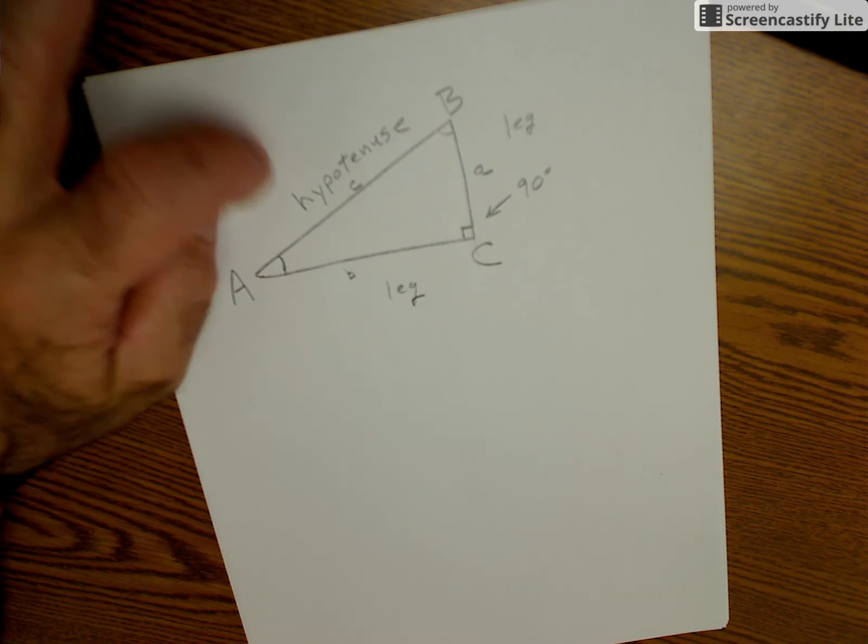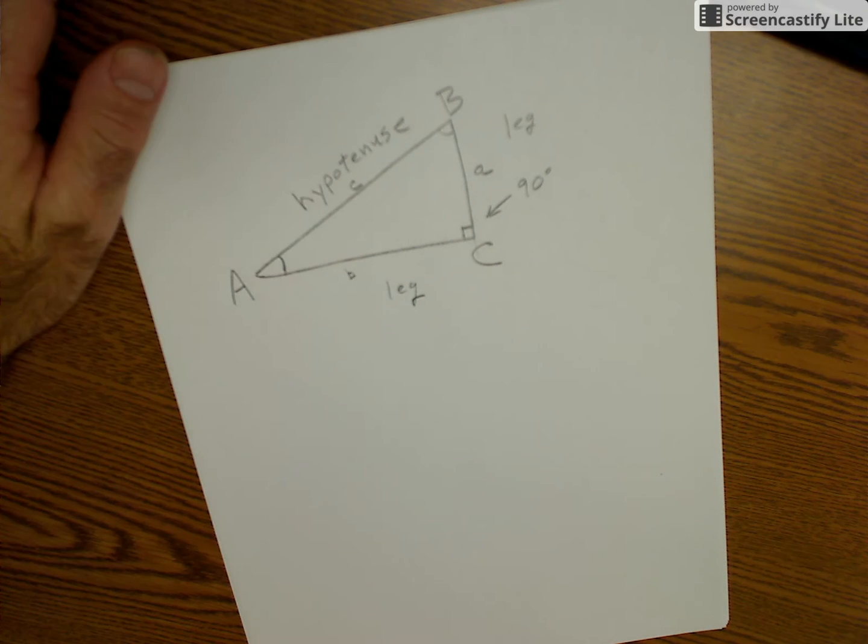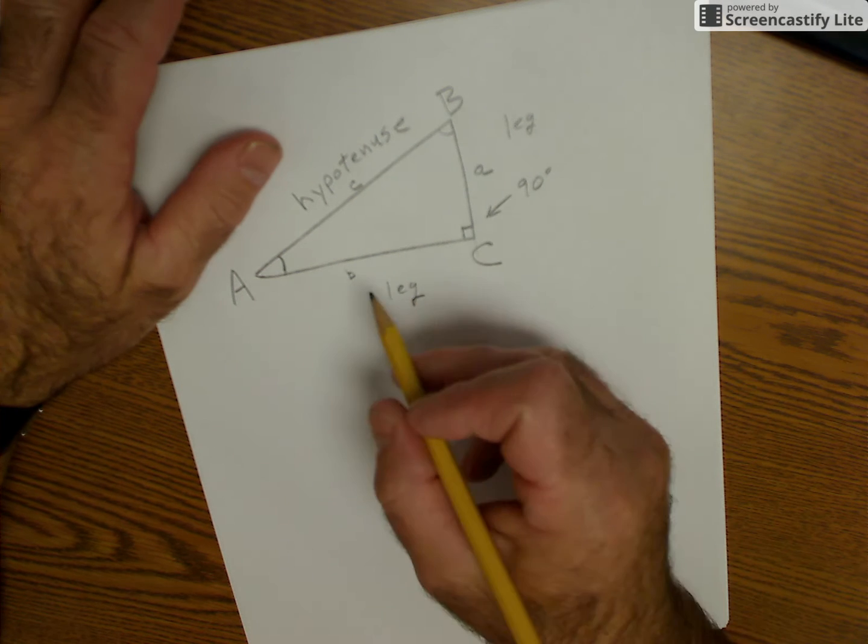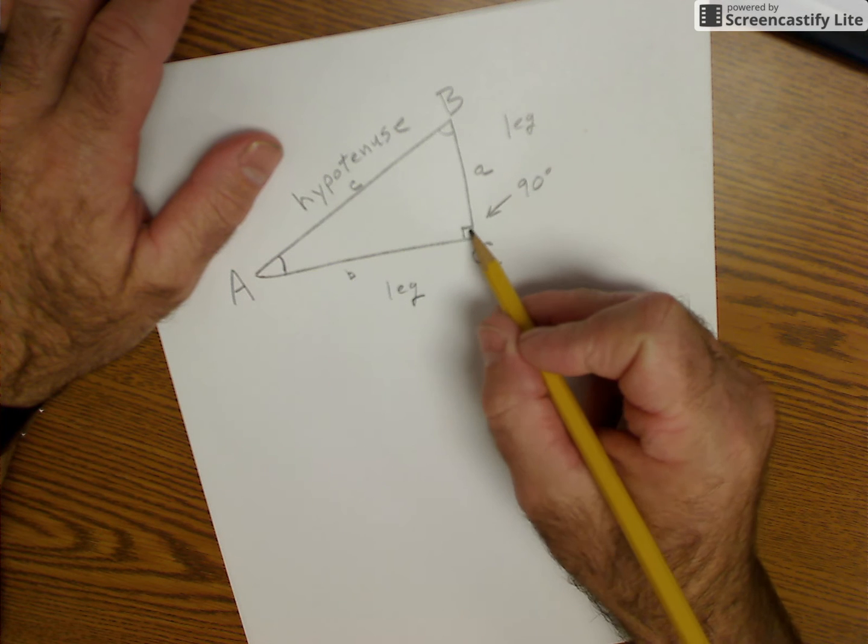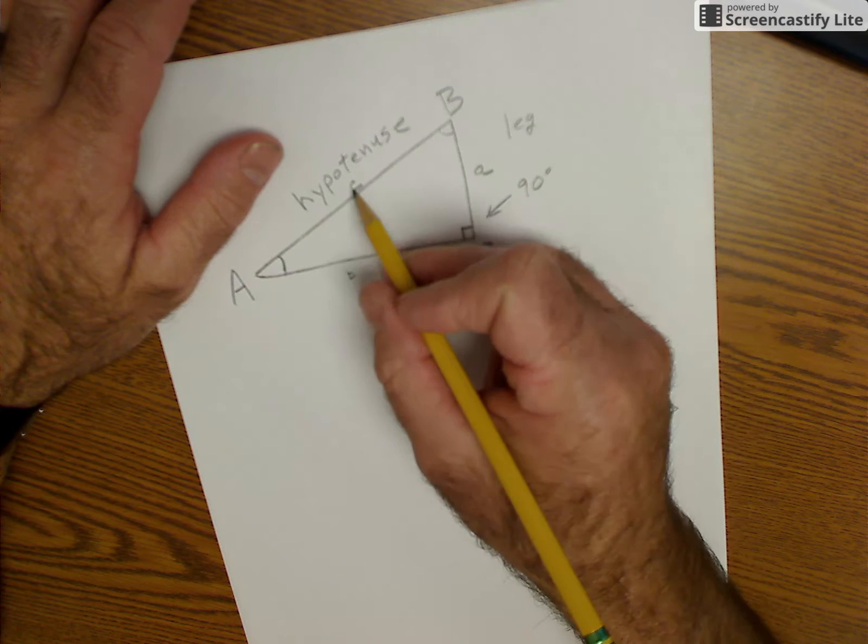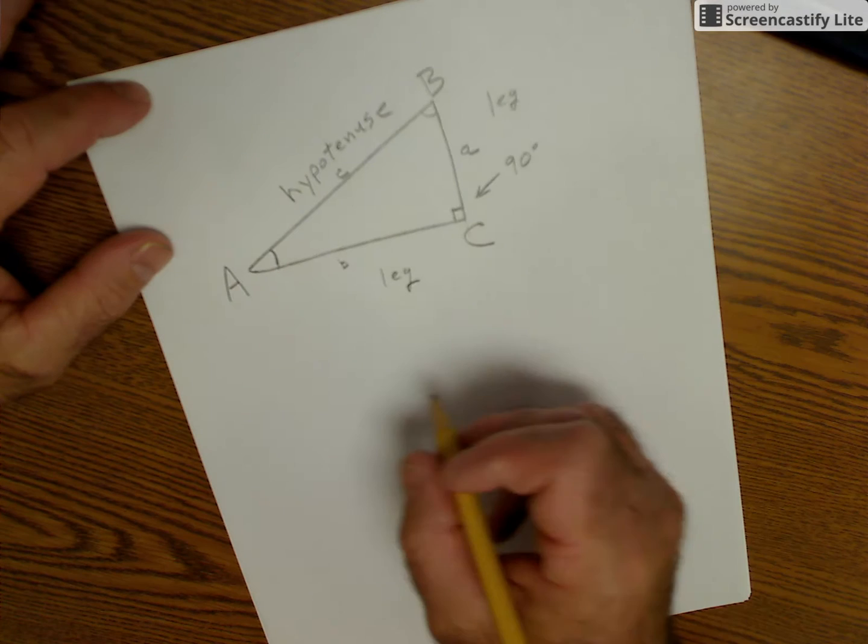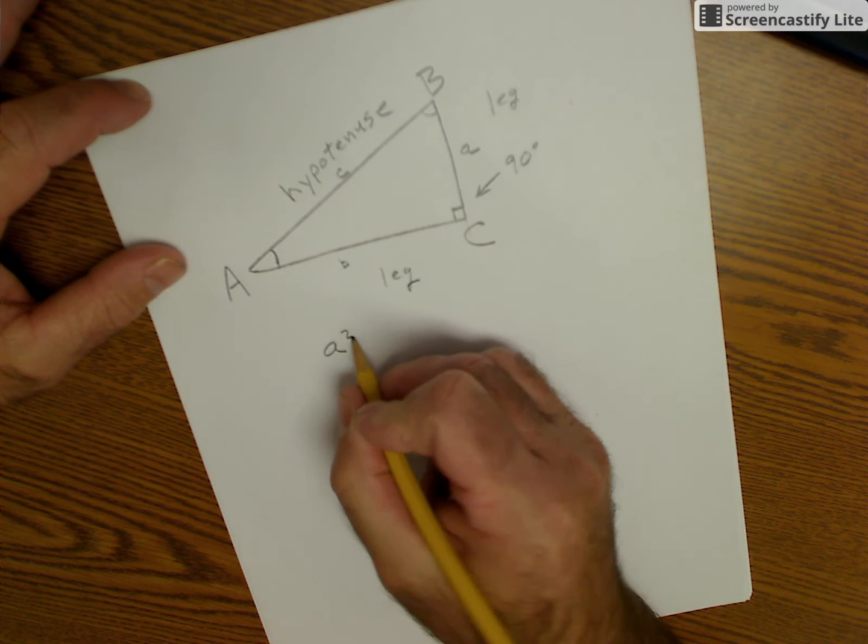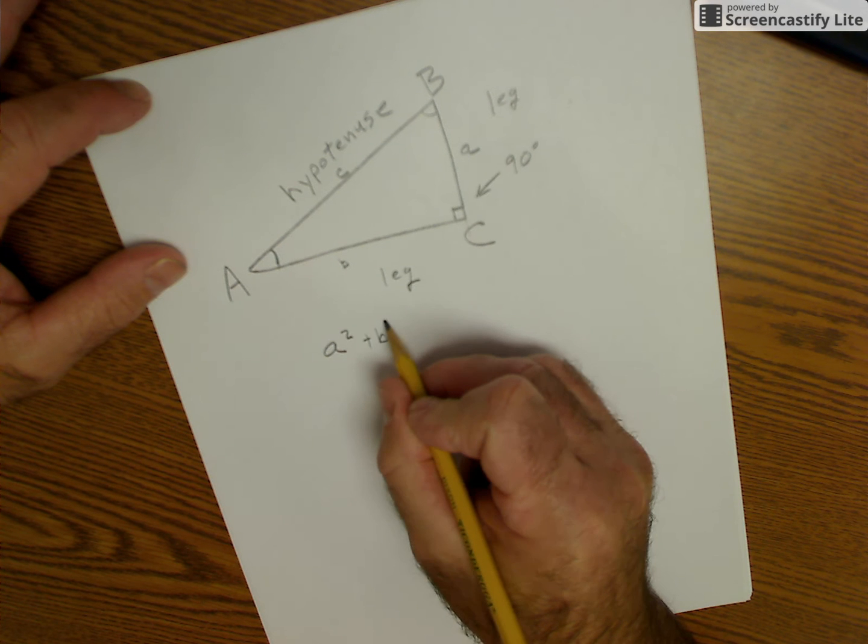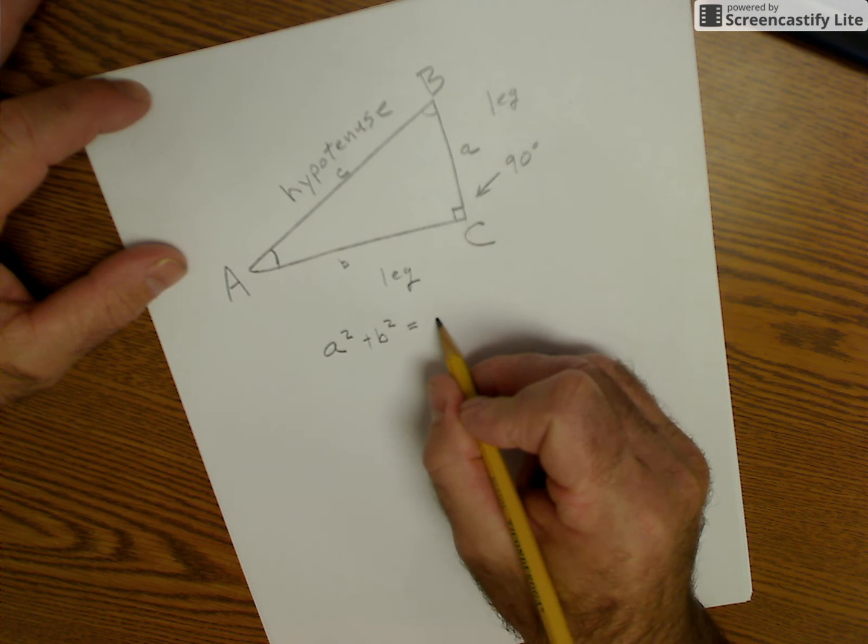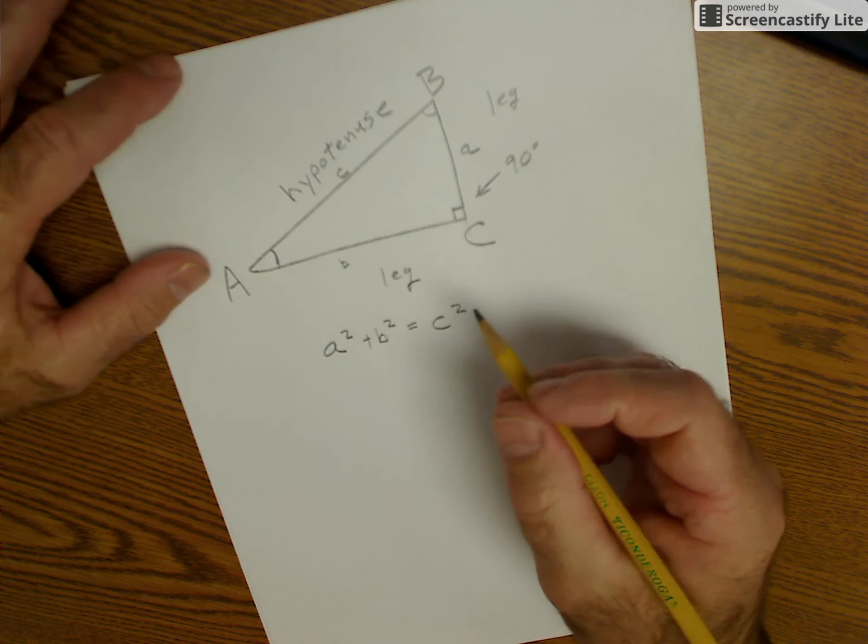The hypotenuse is always the longest side. And if I have, this is my right angle C, my hypotenuse is c. The Pythagorean theorem is one leg squared plus the other leg squared equals c squared.